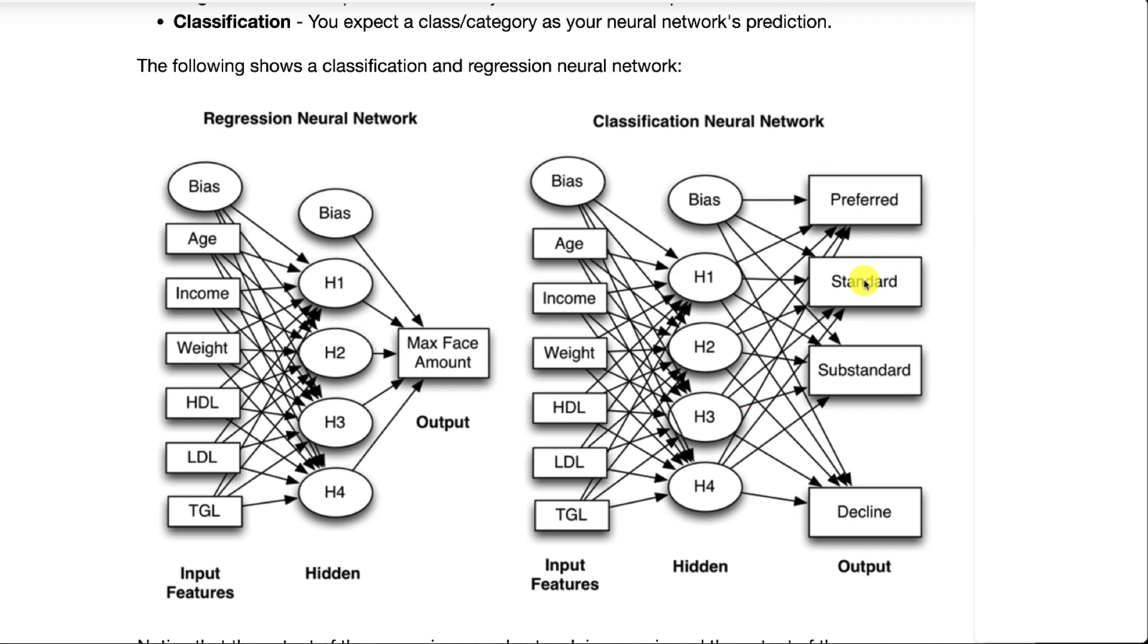The output neurons, the ones on the far right, here there's just one. If it's a regression neural network, it's always going to be just one output neuron.